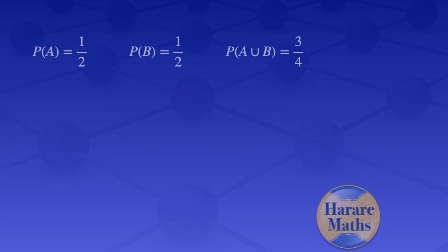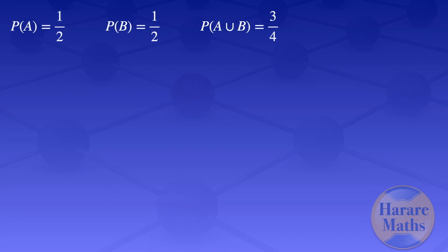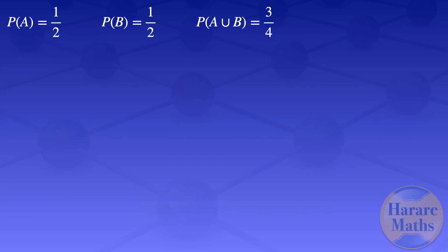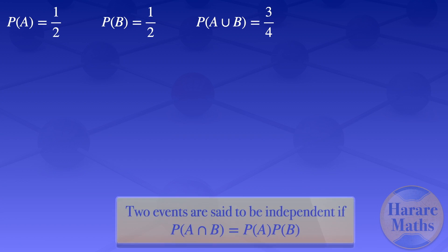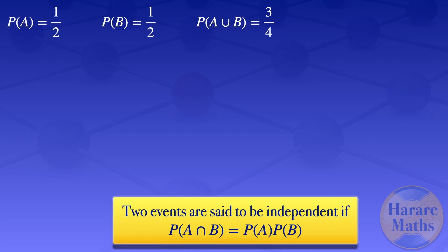Two events are said to be independent if the probability of A intersection B is equal to the probability of A times the probability of B.